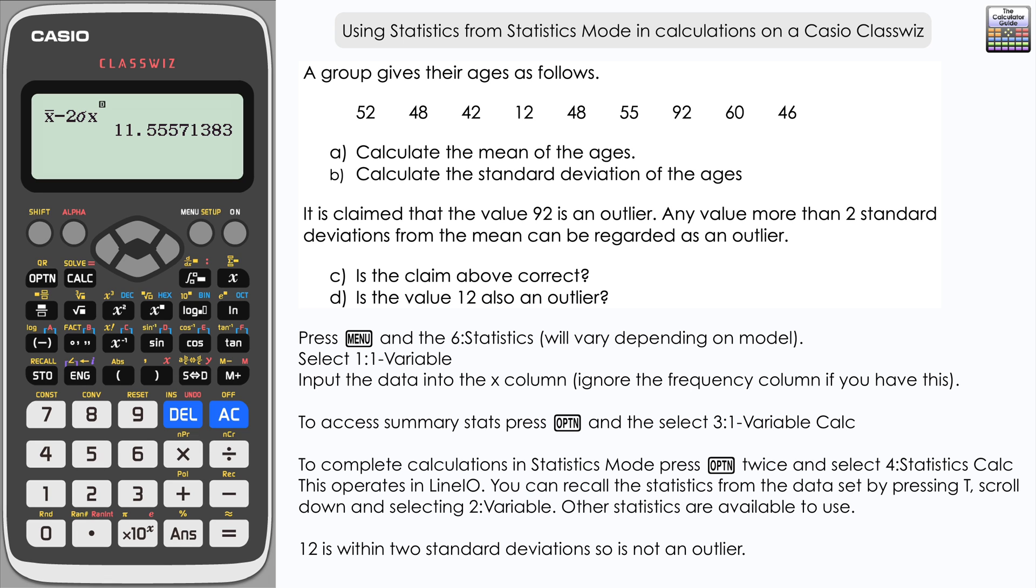For that, we would need values less than 11.55, such as 11, 10, and so on. Statistics mode does enable you to do these linear calculations, and it is probably the best way of approaching questions like this.